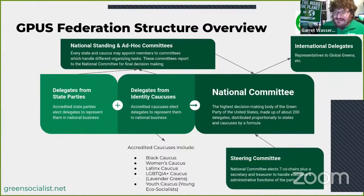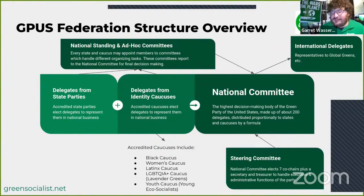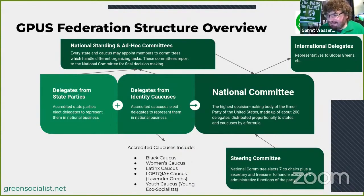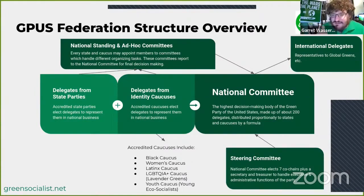This diagram shows how the national party is structured. In the center of the screen on the right you see the national committee — the Green Party's highest decision-making body, known as the Green National Committee. It's made up of about 150 delegates, and these delegates represent all of the different state parties and identity caucuses.